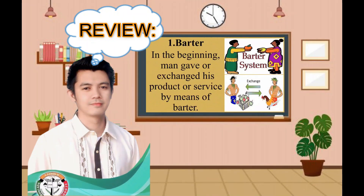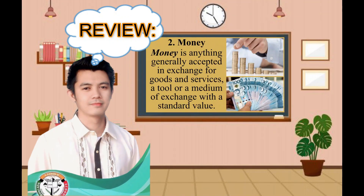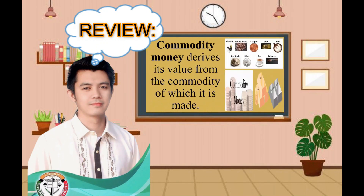The first way is barter. When we say barter, in the beginning, man gave or exchanged his product or service by means of barter. Another is money — money is anything generally accepted in exchange for goods and services, a tool or medium of exchange with a standard value. Commodity money derives its value from the commodity of which it is made — nakabase ang halaga ng pera sa bagay o kalakal na ginamit dito.